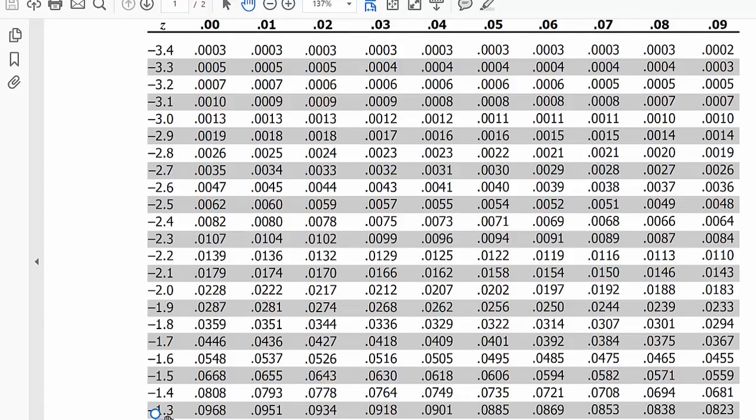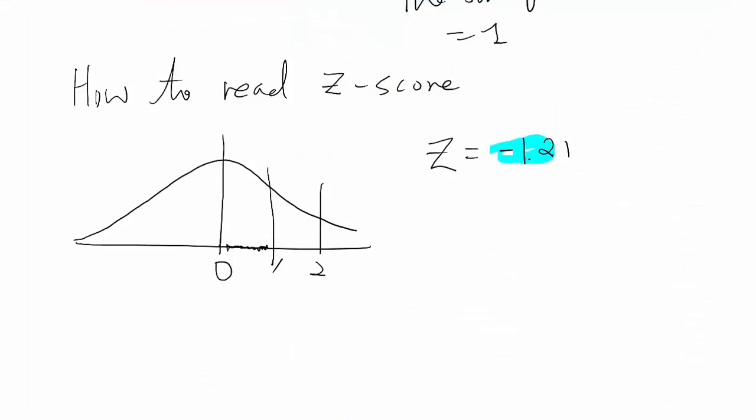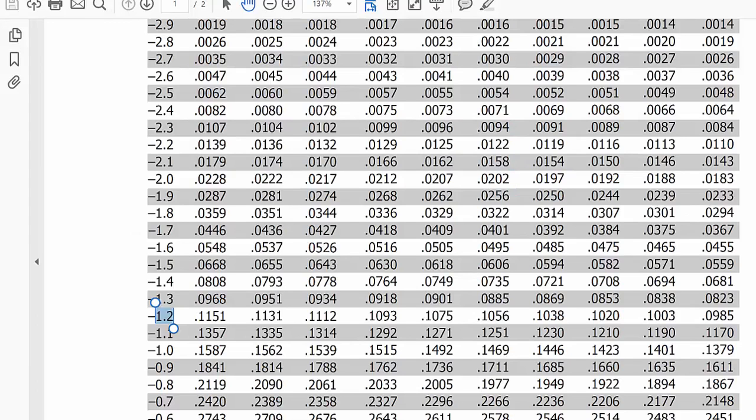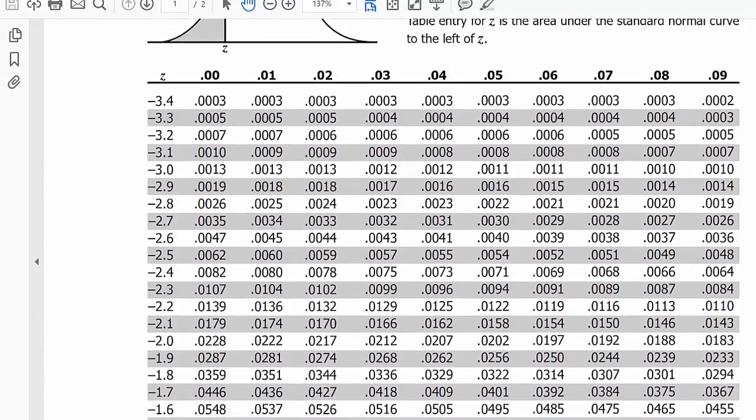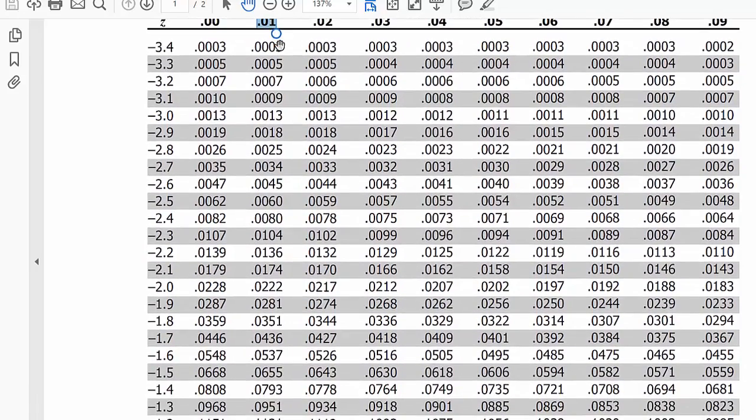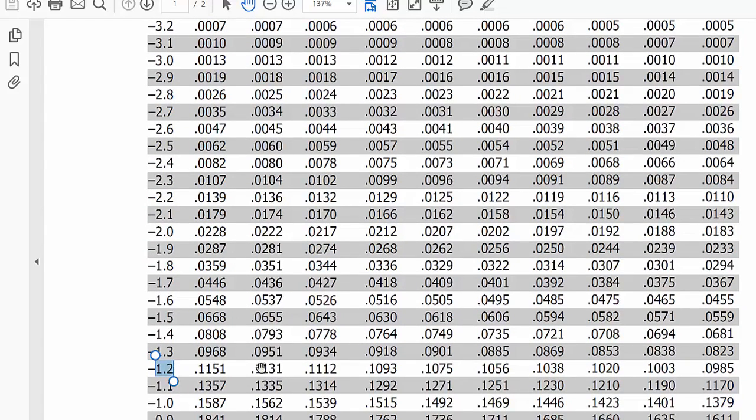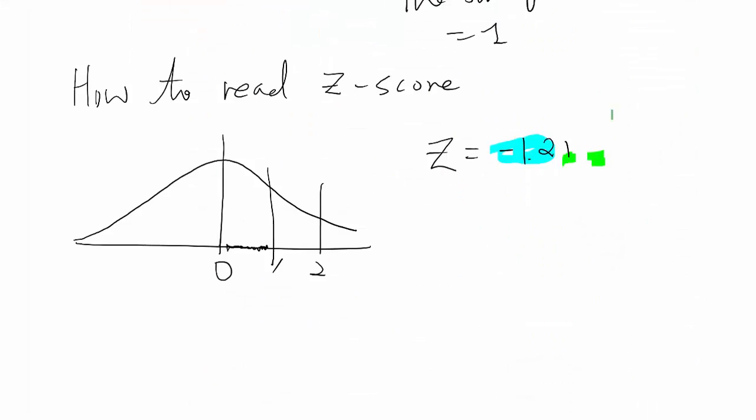See, negative 1.2, and then the next one is 1 here. So just go to the z-table, and then you look at 0.01, right there. You found the intercept point. So negative 1.2, negative 1.21 will be 0.1131, basically. That will be 0.1131.